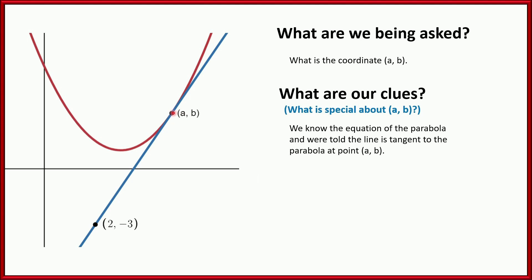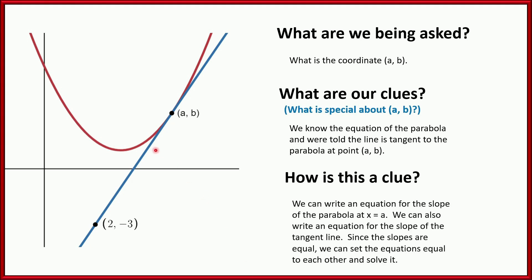What's special about that point (a,b)? Well, (a,b) is the point of tangency. So that means the slope of the blue line is equal to the slope of the parabola at that point. And the reason that's a clue is because I can write the slope for both of these. I know they're equal right there. So I could actually write two equations. I could write an equation for the slope of the parabola at this point, and I can write a formula for the slope of this blue line.